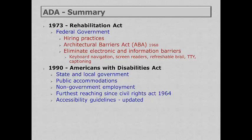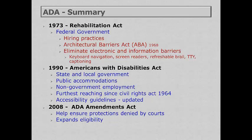The ADA also defined accessibility guidelines, updated from the Architectural Barriers Act. In 2008, the ADA was amended because the courts were providing a very narrow interpretation of the term disability, and the amendment also wanted to expand the eligibility of the ADA to more groups of people.